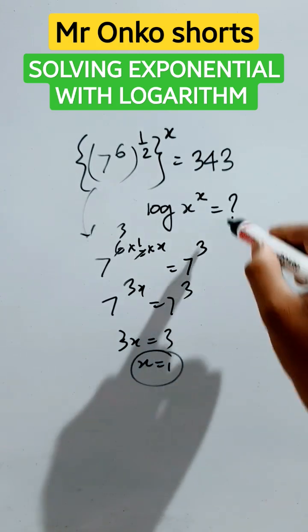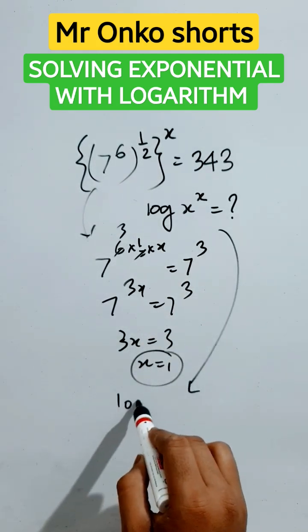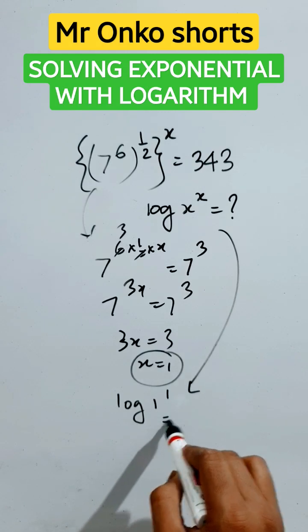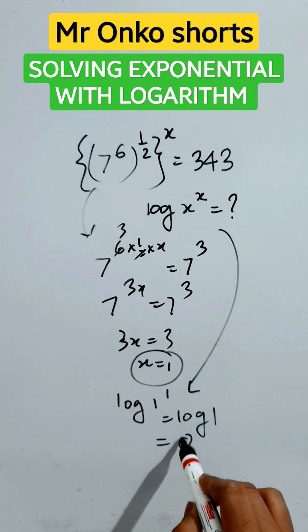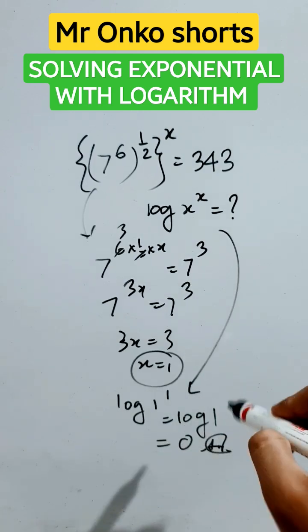Now put 1 here. It will be logarithm of 1 raised to the power 1, which is logarithm of 1. We know the properties of logarithm: log of 1 equals 0. So this is the answer.